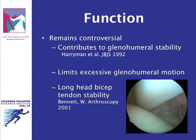Rotator interval structures also contribute to the stability of the long head of the biceps tendon by forming the reflection pulley, which supports the bicipital tendon as it exits the glenohumeral joint.